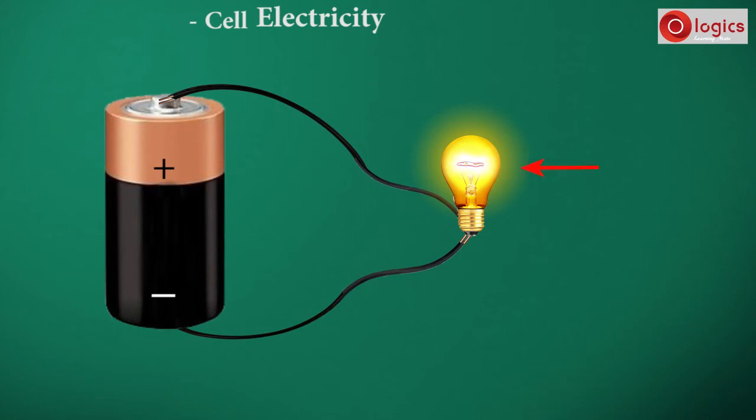See, the bulb is on. It means electricity is flowing through the wire.